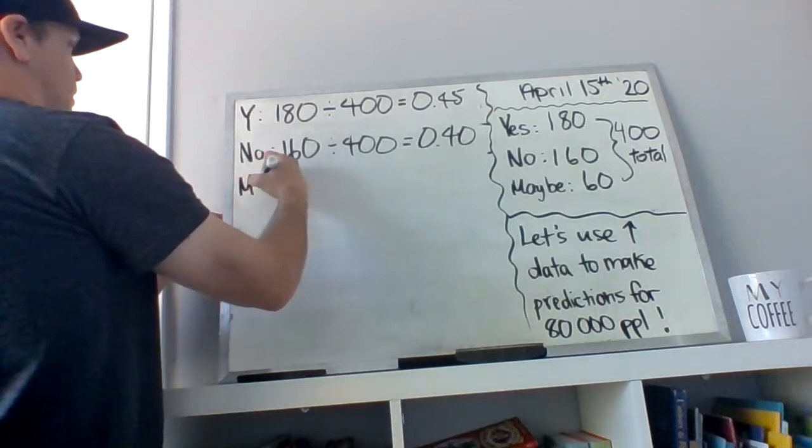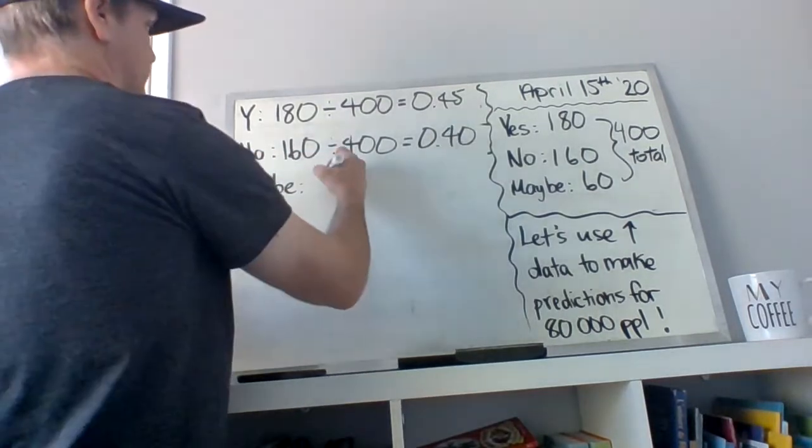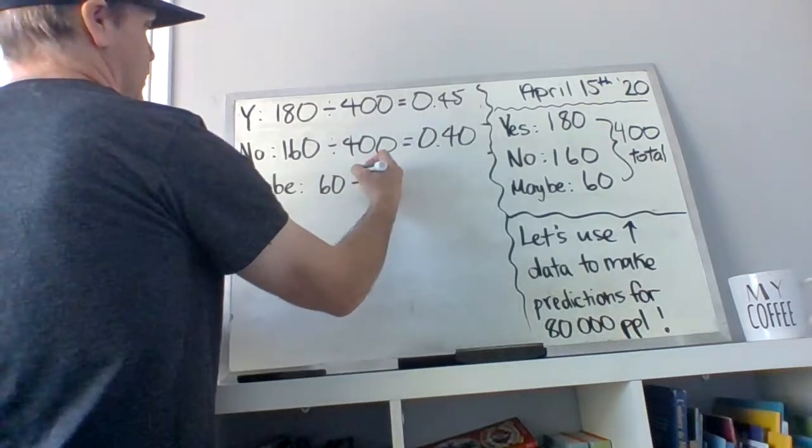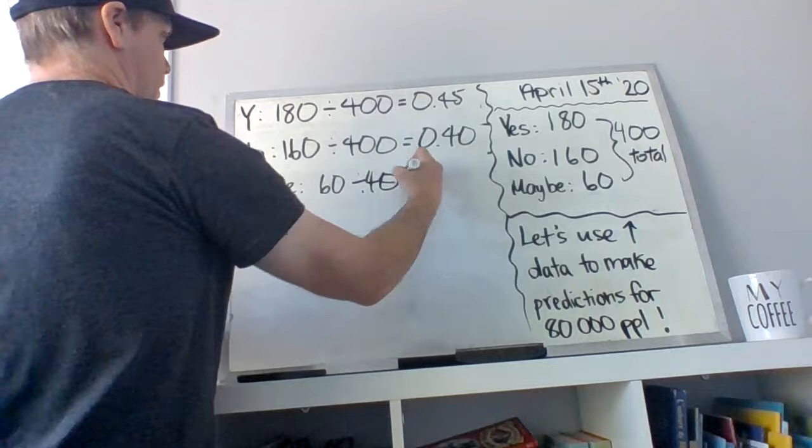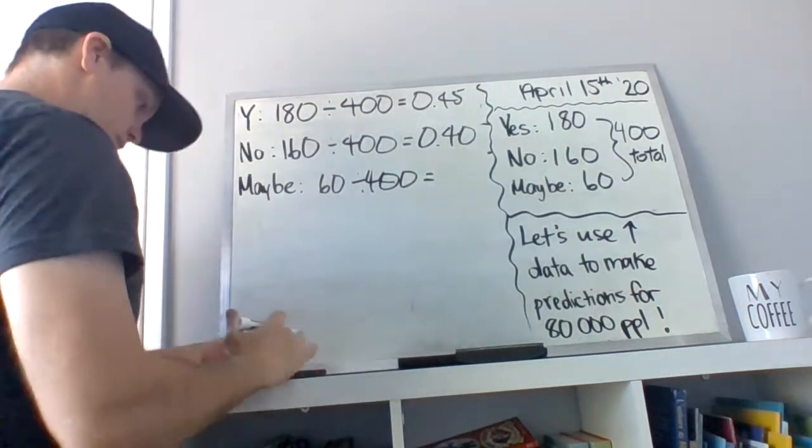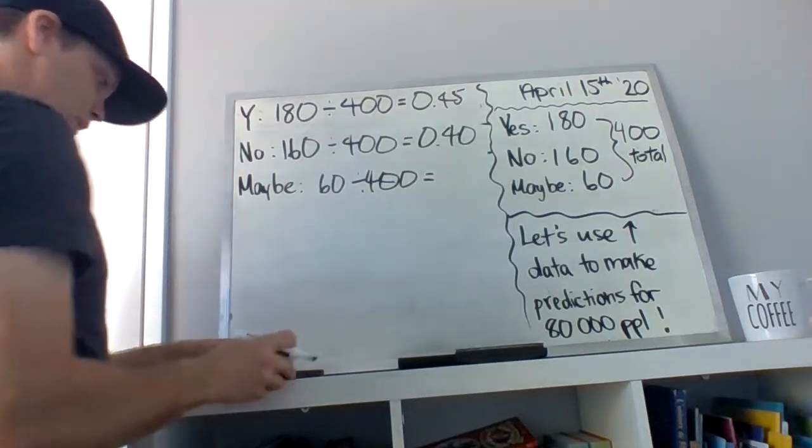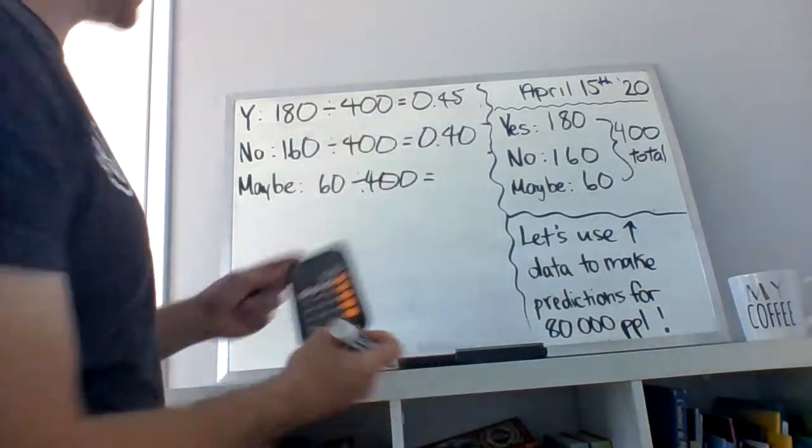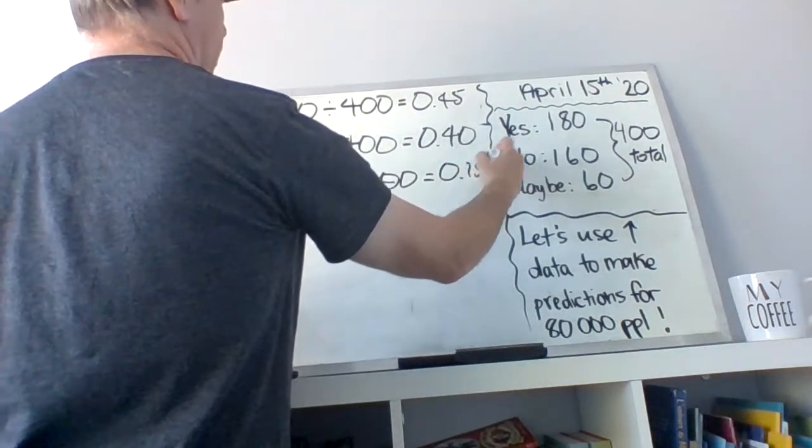And maybe, 60 divided by 400 equals 0.15. Fifteen percent.